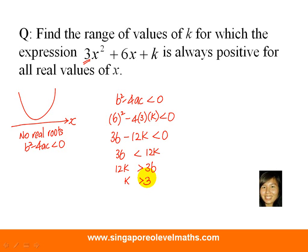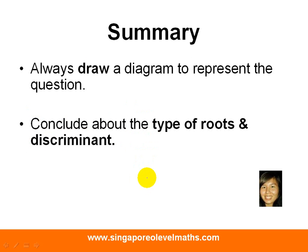Let us have a summary of this question. So, you notice that to actually counter-measure this question, there are two things that you need to do. Always draw a diagram to represent the question. If the question says that the quadratic expression is always positive, you draw a quadratic graph that lies above your x-axis.